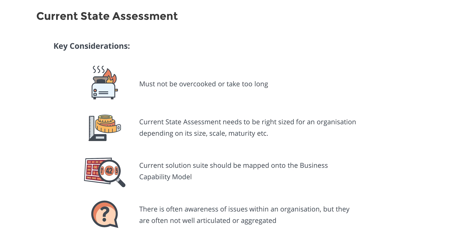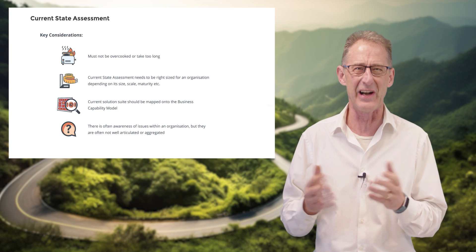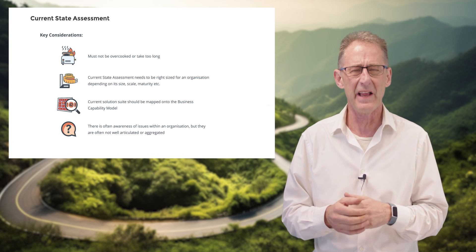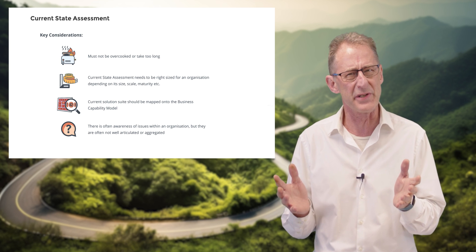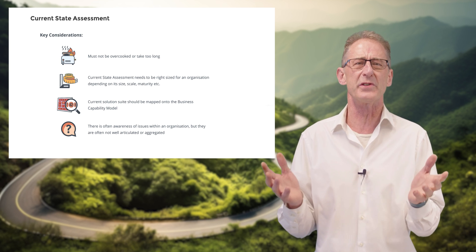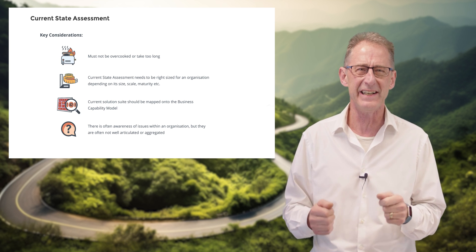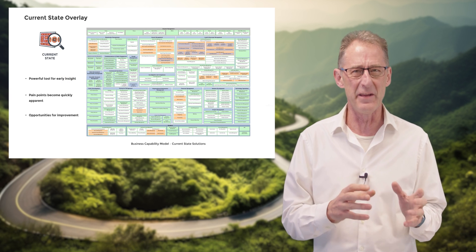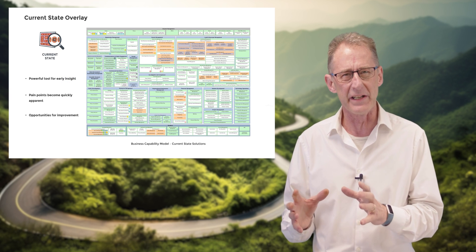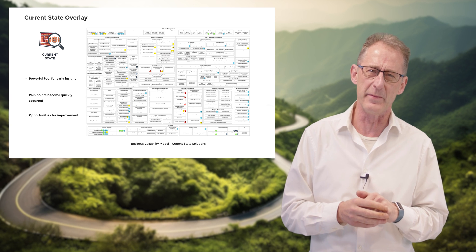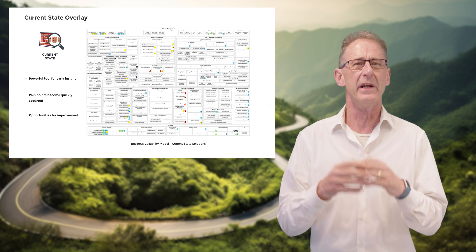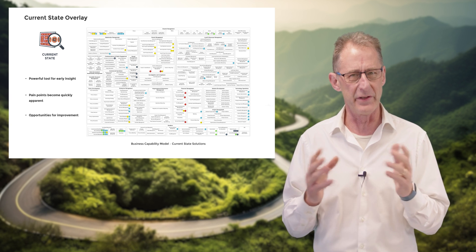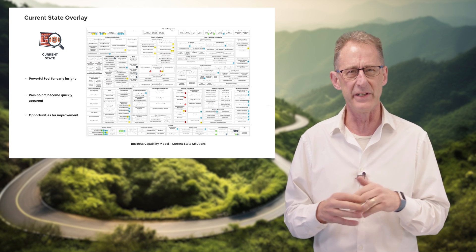Before we perform the actual assessment, we need to gather or catalogue the current technology solutions or applications in your organisation. As everything we do is capability and outcome-based, it should come as no surprise that we're going to capture and map the catalogue at the capability level, and then overlay the solutions onto a business capability model — the one we developed in step two and covered in the second video in this series.